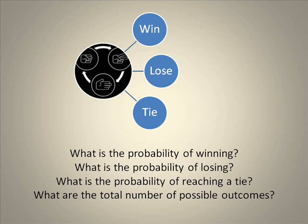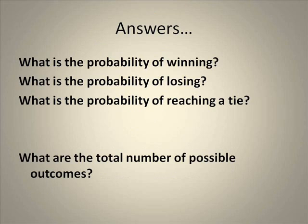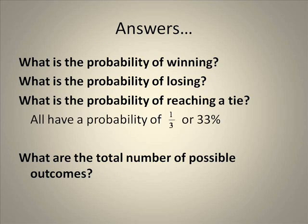This diagram shows the beginning of a tree diagram, which we've seen in class. So for round one, we can either win, lose, or tie. But what is the probability of winning, losing, or reaching a tie? And what are the total number of possible outcomes? Well, since there are three total possibilities and winning is only one of them, you have a one-third chance of winning. They all have a probability of one-third, or about 33%. The total number of possible outcomes is three.